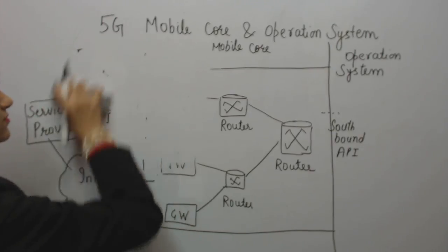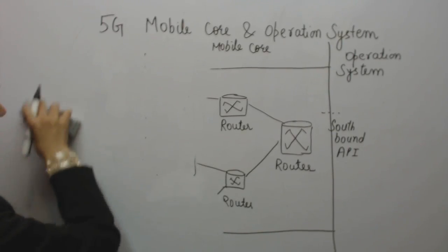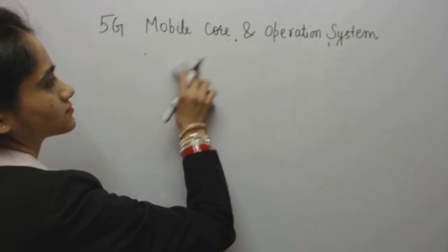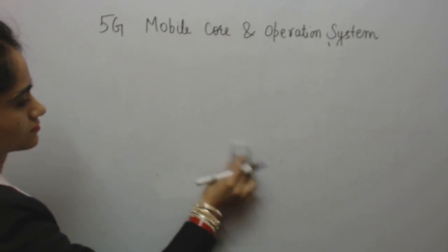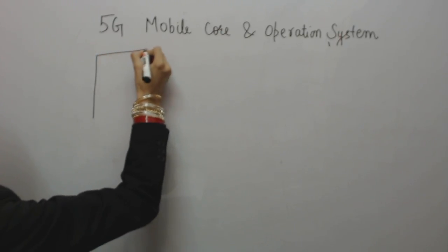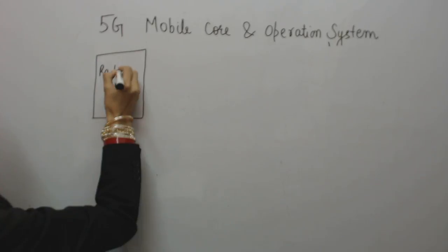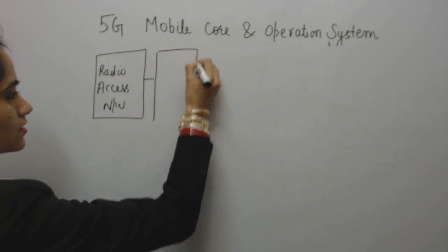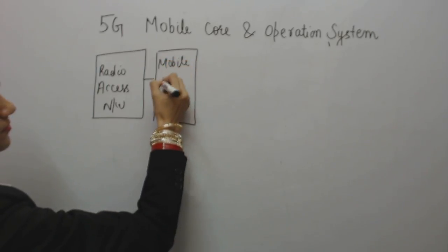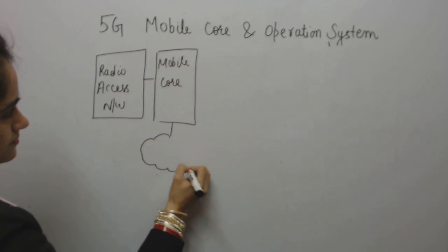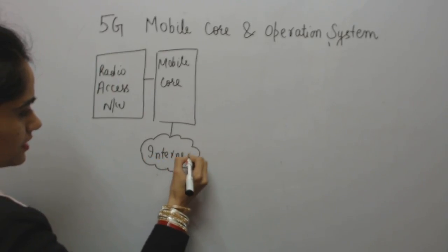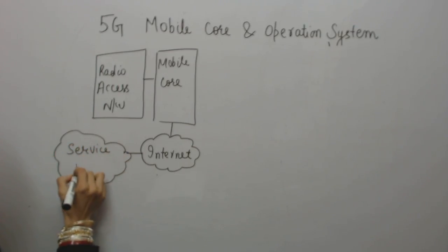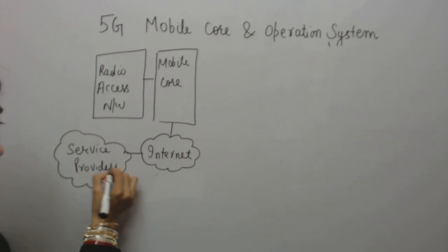To summarize the diagram: the radio access network is connected with mobile core, mobile core is connected with the internet, and the internet is connected with service providers.